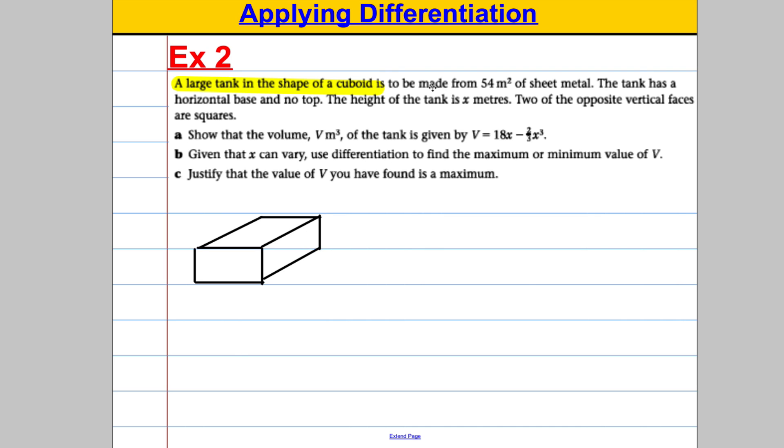Now, it's to be made from 54m² of sheet metal. The tank has an original base and no top. So here we've just got an open top. No top. But we do have a base. The height of the tank is to be x metres. So this height here is to be x metres.